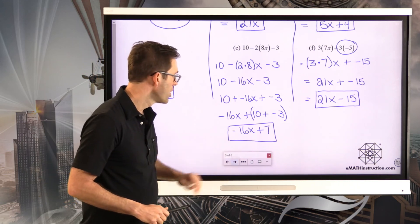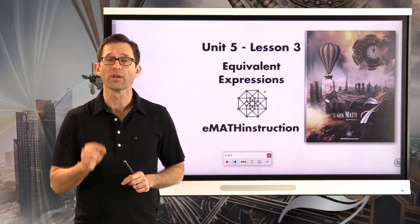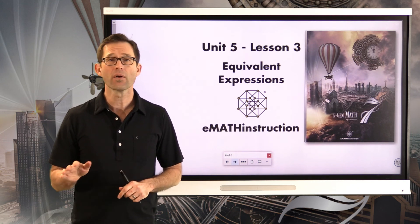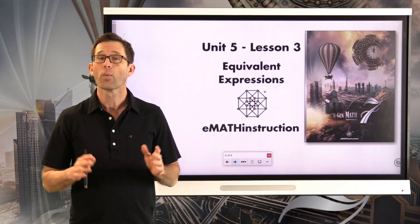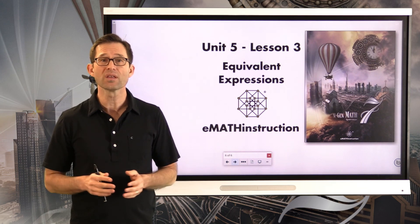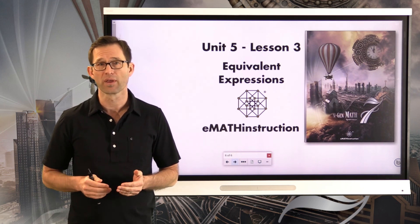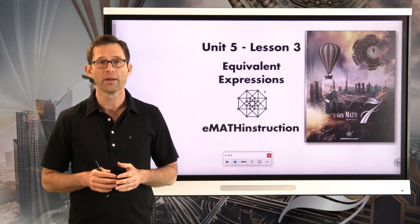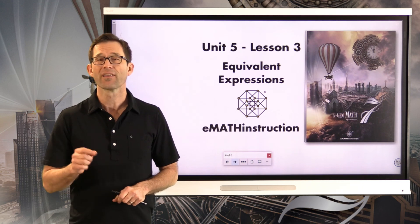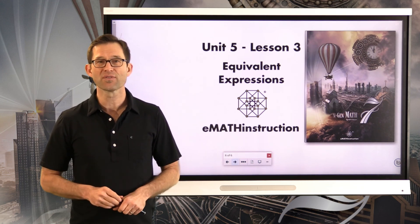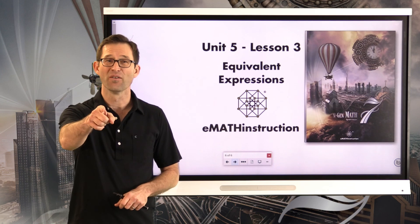In this lesson, we looked at equivalent expressions — two algebraic expressions that have the same value given a value of x. That's a very, very important idea, important enough that we're going to do a whole other lesson on it next time. We also saw how equivalent expressions arise simply by using the associative and commutative properties of addition and multiplication. Thank you for joining me for another NGen Math 7 lesson by eMath Instruction. My name is Kirk Weiler, and until next time, keep thinking and keep solving problems.